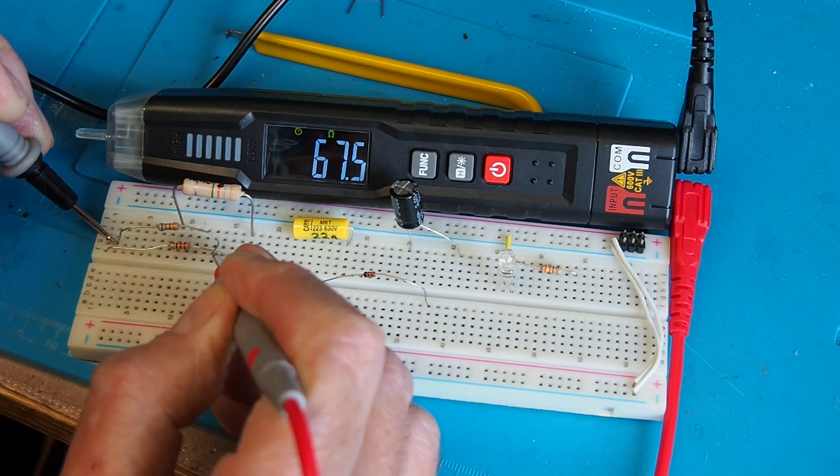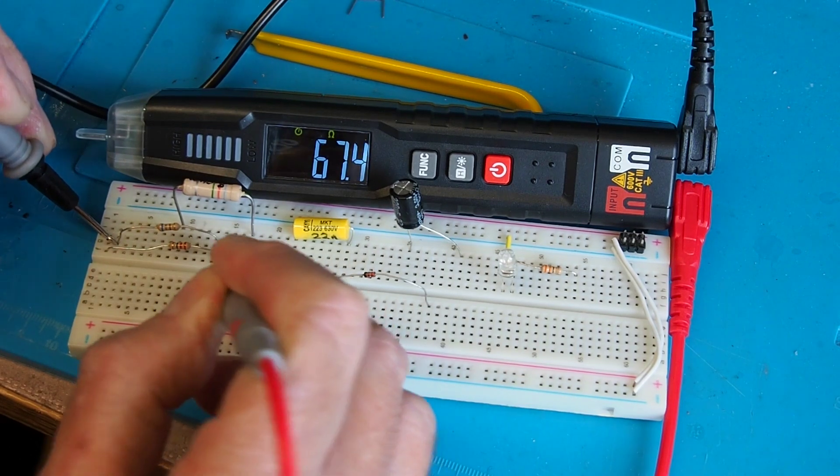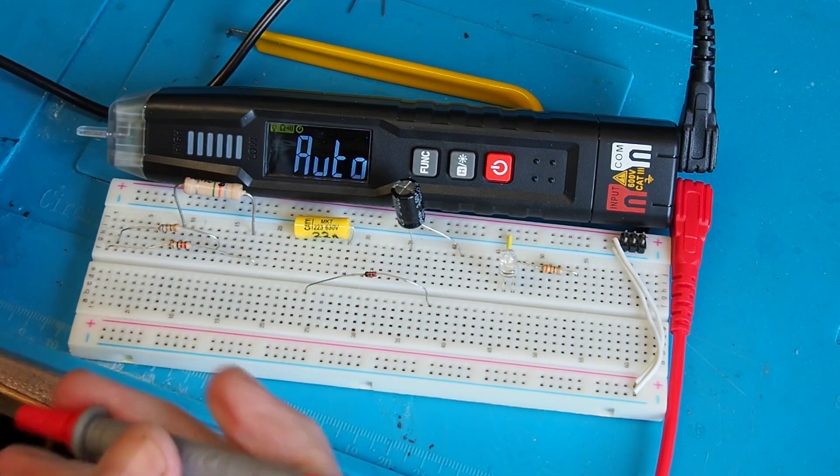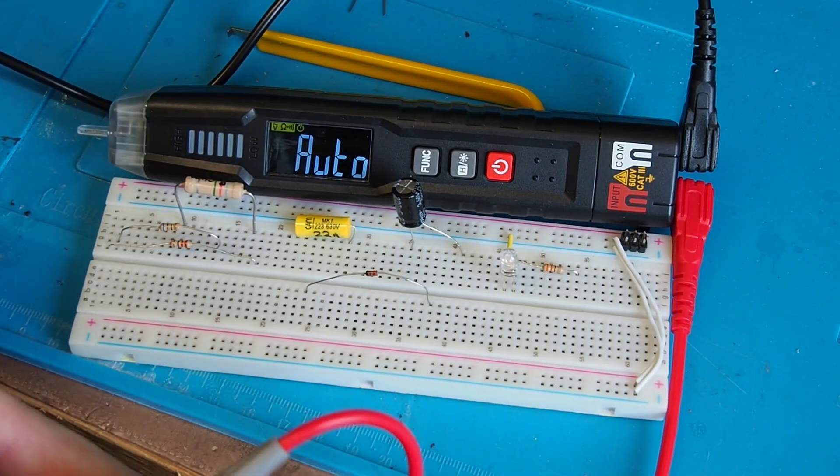If we take a resistance that's above 50 ohms, here we've got a 68 ohm resistor coming in at 67.5 and as you can see it's not sounding the buzzer. In terms of ohms, seems to be doing okay.